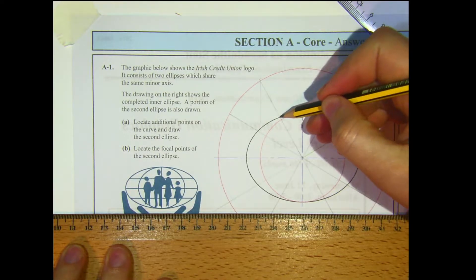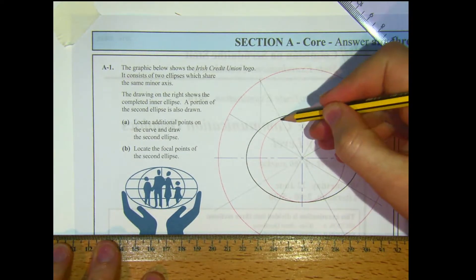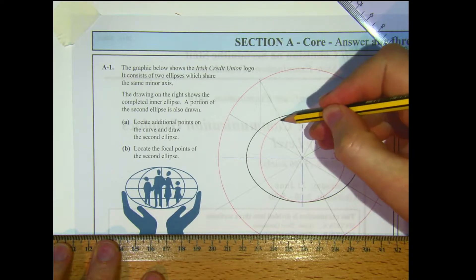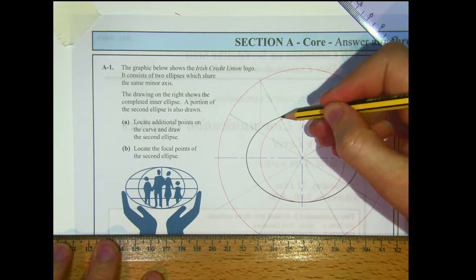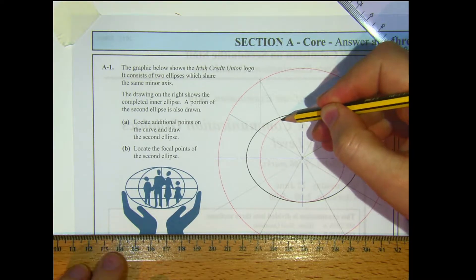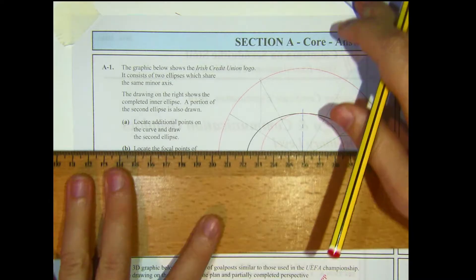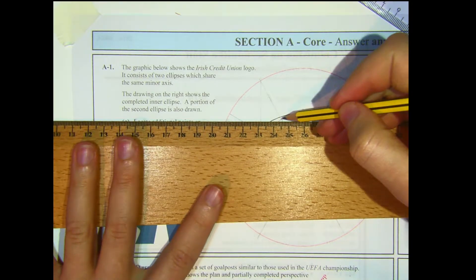This same line cuts the minor auxiliary circle — that's the red circle, so make sure you're using the red circle, not the black line. From where it cuts the minor auxiliary circle, go perpendicular to the minor axis.